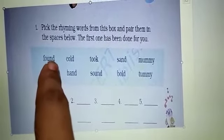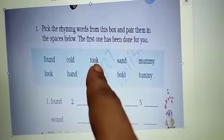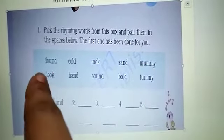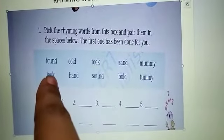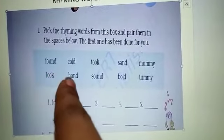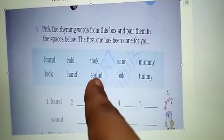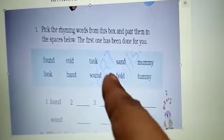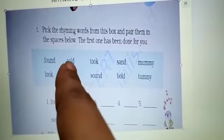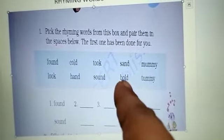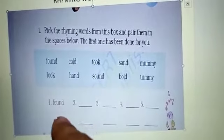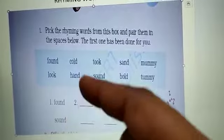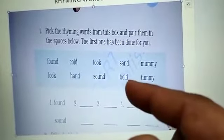Found, took, sent, mummy, look, hand, sound, bold. You can see the sound matching with 'cold' is 'bold.' So the first pair done is found and sound, then second is cold and bold.